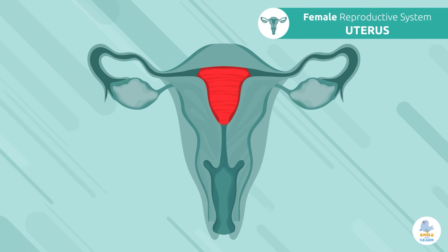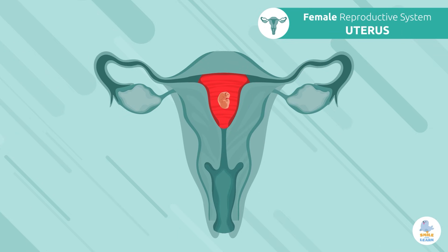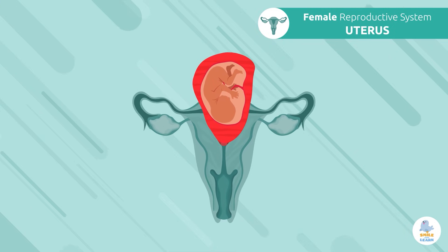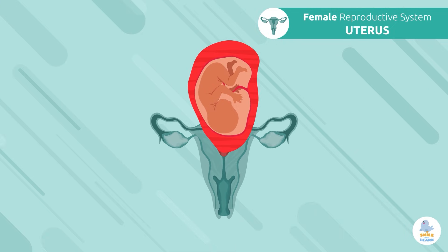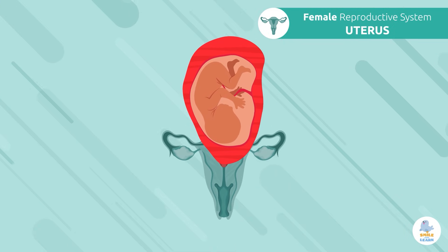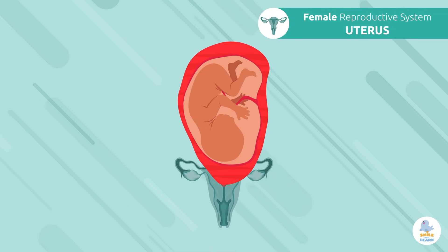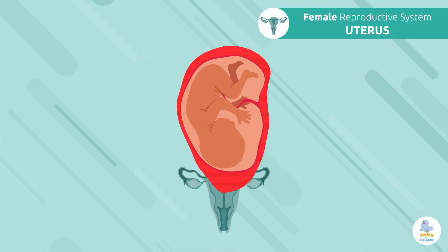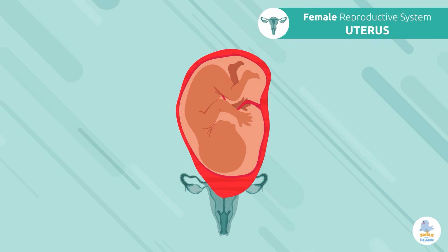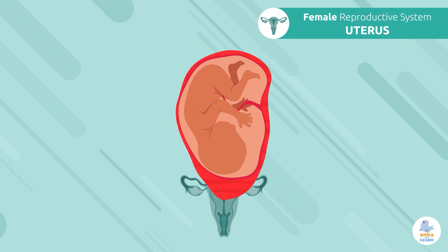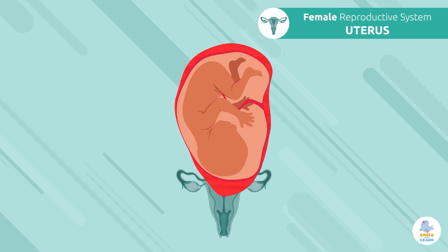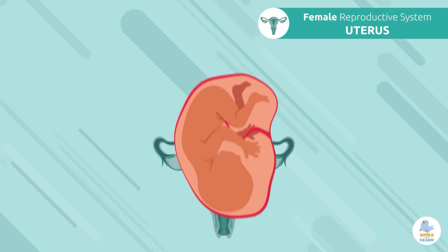Uterus: the uterus is a hollow organ where the fetus develops during pregnancy. It's very muscular, since it has the ability to expand as the fetus grows, and later it helps push the fetus out during delivery.